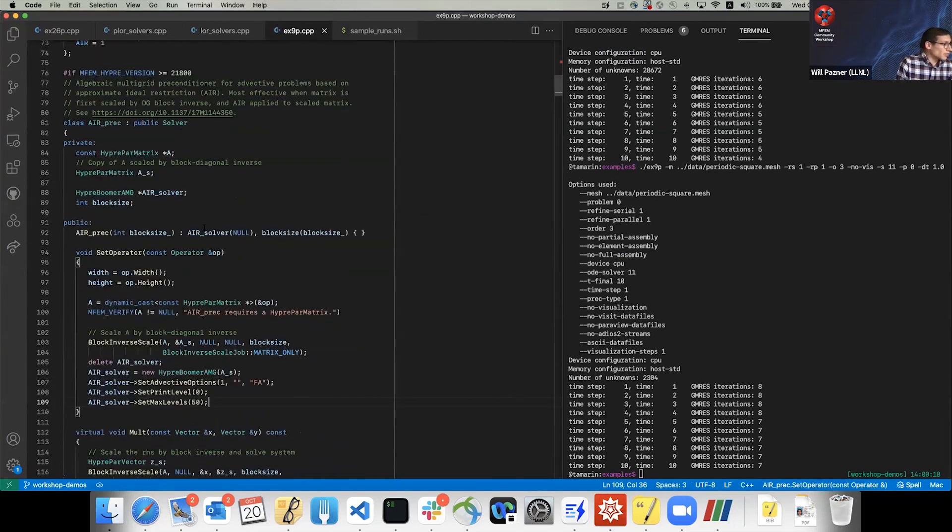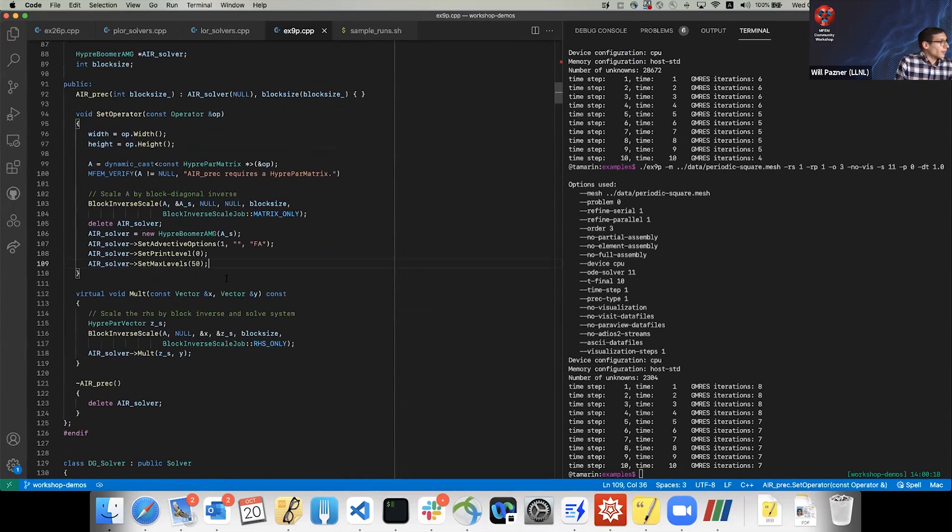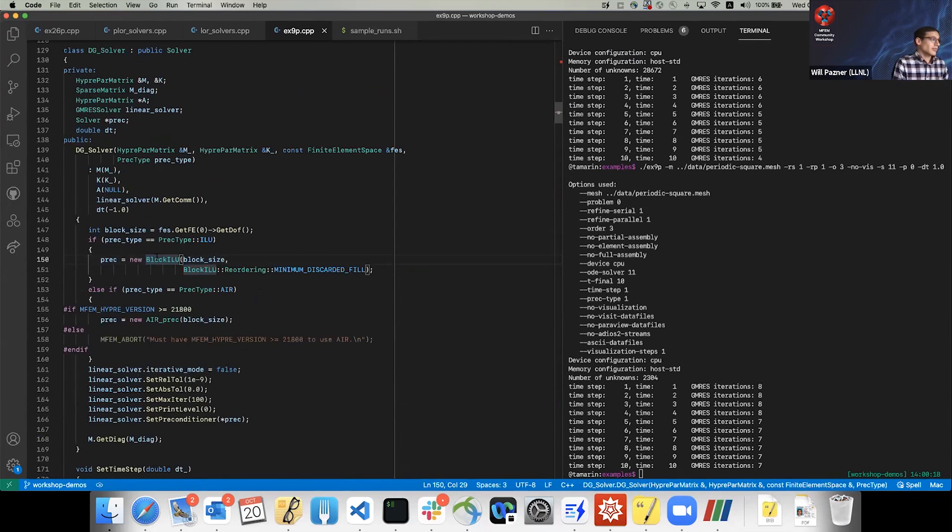I'll just show the code very quickly, because my time is basically up. The main thing here is AIR is constructed as a BoomerAMG, just like normal AMG solvers, but then you do SetAIROptions. There are some options about pre-smoothing and post-smoothing that allow you to customize it. This basically makes the AMG work for non-symmetric problems. For block ILU, you construct BlockILU, tell it the block size - for DG methods, it's like the size of your elements - and tell it to order with minimum discarded fill, so it identifies those sweeping orders.